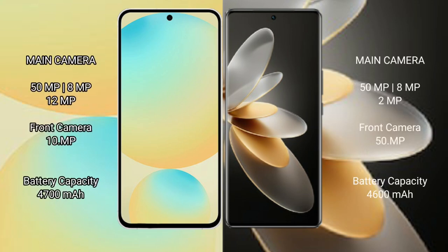The Samsung Galaxy S24 FE features a triple rear camera setup of 50MP plus 8MP plus 12MP, and a 10MP front camera. The vivo V27 Pro also features a triple rear camera setup of 50MP plus 8MP plus 12MP, with a 15MP front camera.